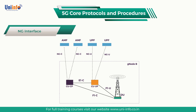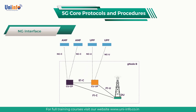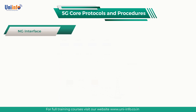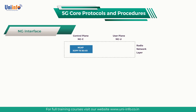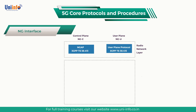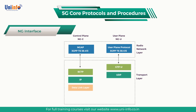If the CU-DU split base station architecture is used, then these interfaces connect the CU to the 5G core network. If the CP-UP separation base station architecture is used, then the NGC connects the CU-CP to one or more AMF, while the NGU connects the CU-UP to one or more UPF. The figure on the screen shows the control plane and user plane protocol stacks belonging to the NG interface. The control plane uses SCTP over IP, whereas the user plane uses GTP-U over UDP over IP.